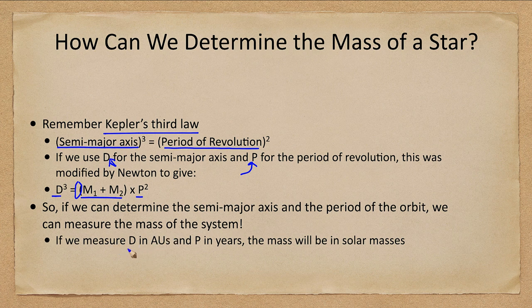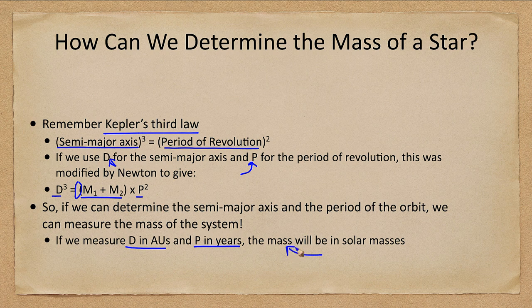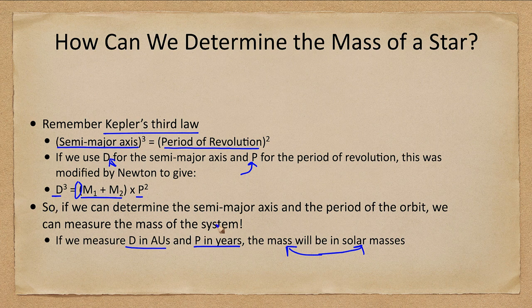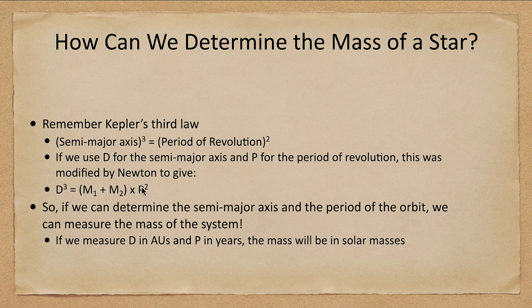We can simplify this because if we measure these in specific units then we don't need a constant. We can make that constant equal to one. So we measure D in astronomical units, the period in years, and in that case the mass will be in solar masses. So if we determine the semi-major axis and period of a star, we can determine the sum of the two masses of those stars. We can determine the mass of that system.